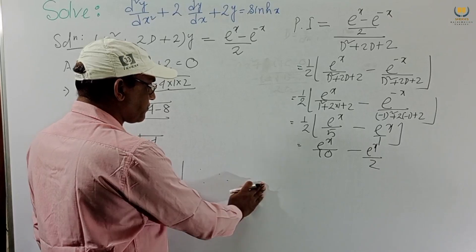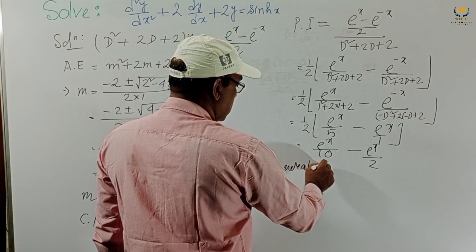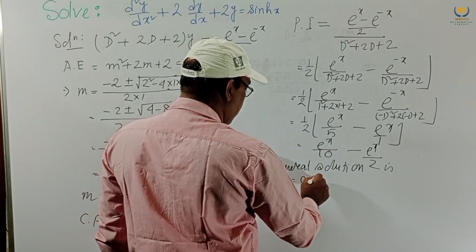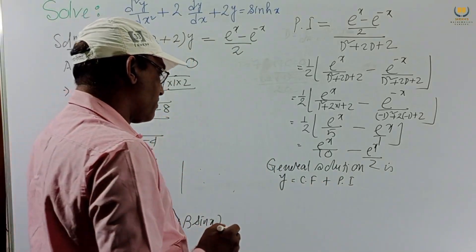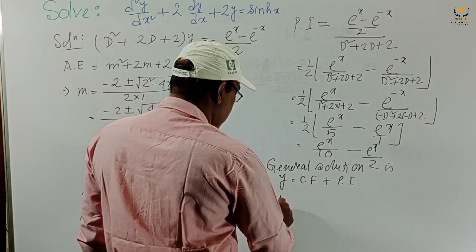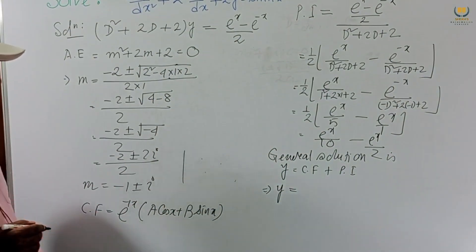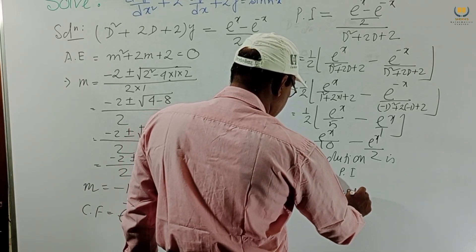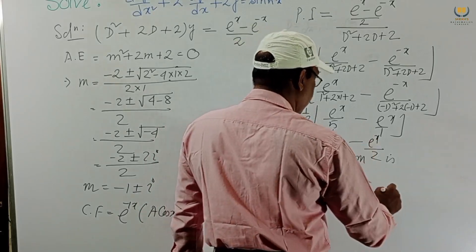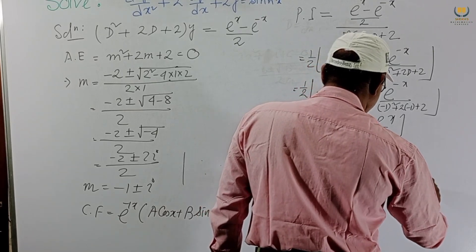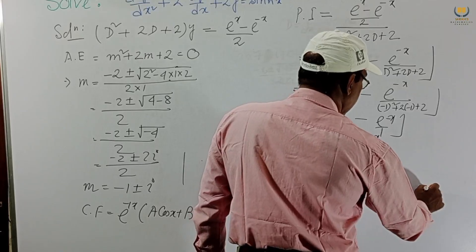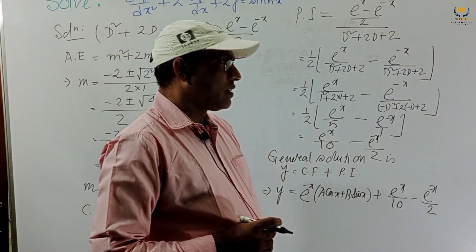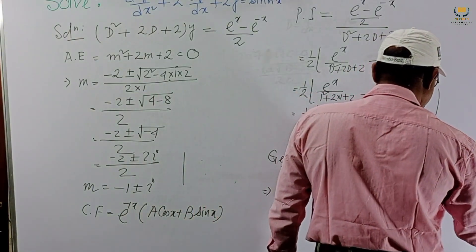Now we find the general solution. The general solution is y = CF + PI. Therefore y = e^(-x)(A cos x + B sin x) + e^x/10 - e^(-x)/2. This is our final answer and the complete solution of Problem 1.